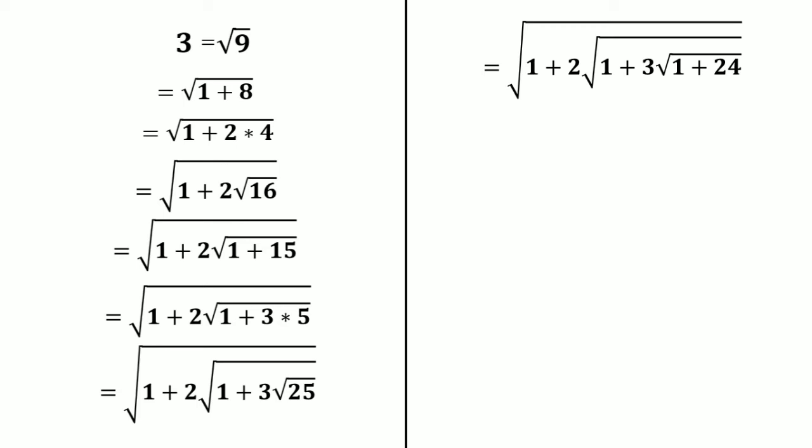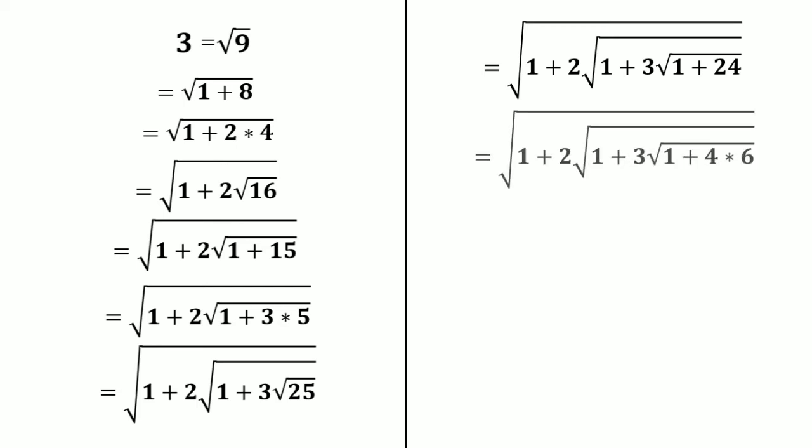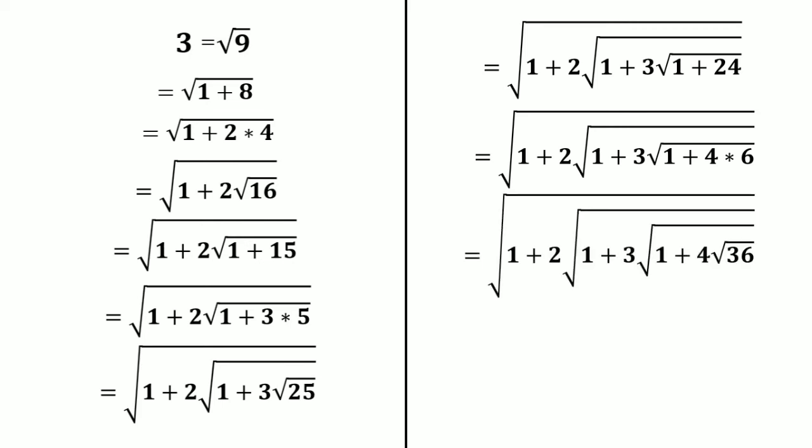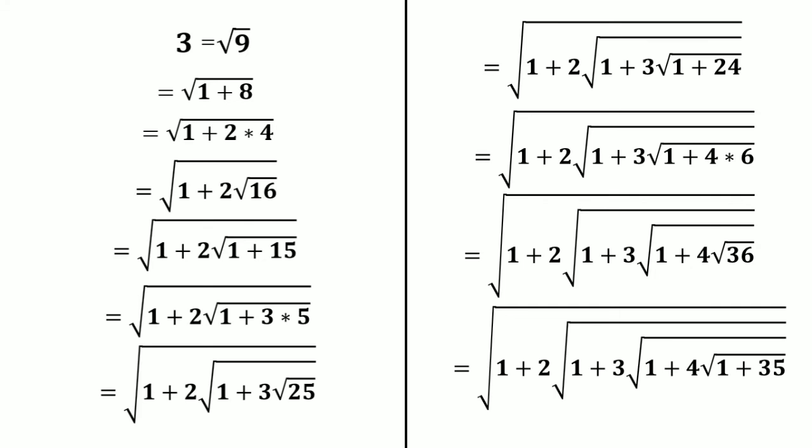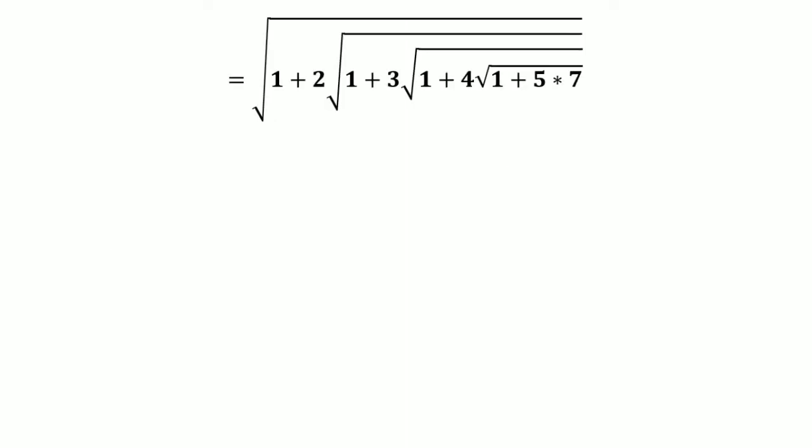We express 24 = 4 × 6, giving √(1 + 2·√(1 + 3·√(1 + 4·6))). Then 6 = √36, so √(1 + 2·√(1 + 3·√(1 + 4·√36))). This is also expressible as √(1 + 2·√(1 + 3·√(1 + 4·√(1 + 35)))). We can express √(1 + 35) = √(1 + 5·7), and in the same pattern this continues up to infinity.